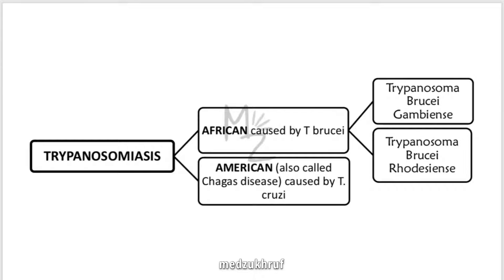There are two types of this disease. The first one is African Trypanosomiasis, which is also called African sleeping sickness, caused by Trypanosoma brucei, divided into Trypanosoma brucei gambiense and Trypanosoma brucei rhodesiense. Another type is American Trypanosomiasis, also called Chagas' disease, caused by Trypanosoma cruzi. I've discussed Trypanosoma cruzi in my recent video — don't forget to check that out.